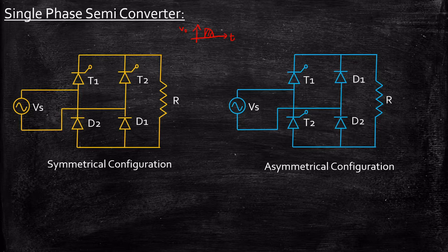Compared to a fully controlled rectifier circuit, we are replacing two SCRs with uncontrolled diodes D1 and D2. That's the major difference in terms of circuit, and the output voltage will always remain positive. You might ask why not use a fully controlled rectifier. The reason is SCRs are more expensive compared to a diode. So having four SCRs to get only positive output voltage makes no sense. We can replace two SCRs with a diode and still get the positive output voltage required at the load terminals. Hence, we use semi-converters in applications that demand only one quadrant operation.